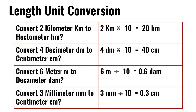Length unit conversion. Convert 2 kilometers to hectometers: 2 kilometers times 10 is 20 hectometers. Next, convert 4 decimeters to centimeters: 4 decimeters times 10 is 40 centimeters.